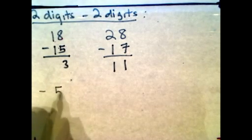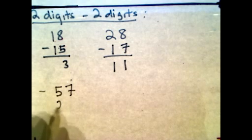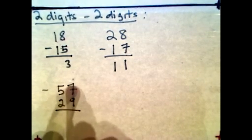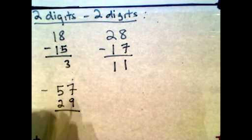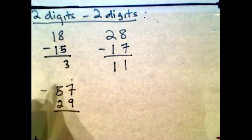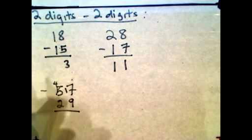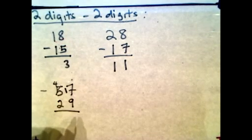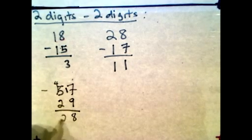Let's try a harder one: 57 minus 29. Notice this number here is bigger than that number, so you have to borrow from the 5 tens. The 5 becomes 4, and we carry over a 10 to the 7, making it 17. 17 minus 9 is 8. Then 4 minus 2 is 2. So the answer is 28.